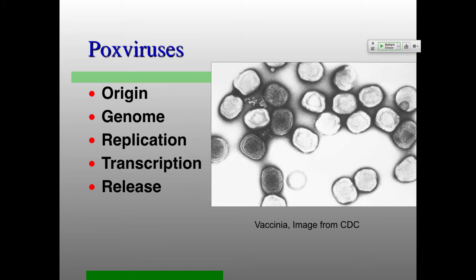Quick review on the pox viruses. Again we talked a little bit about disease but mostly about vaccination, and how amazing it is that smallpox has been completely eliminated. The main reason for that is the vaccine, but also that smallpox only infects humans — there's no reservoir species. So you can vaccinate everybody and have it taken care of with that narrow host range.